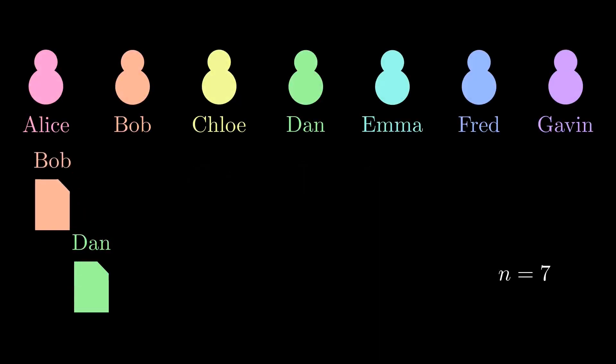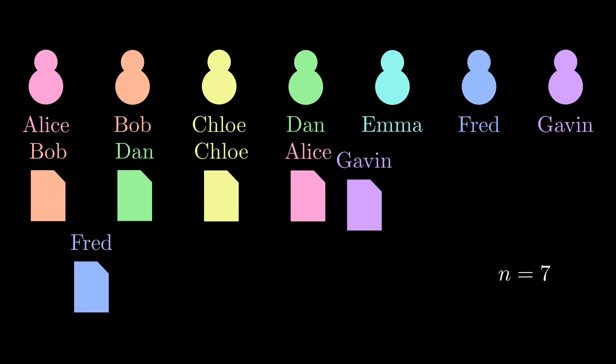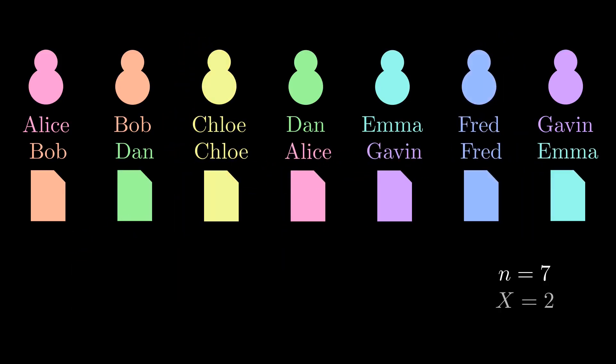To recap, we showed that the expected number of fixed points for a randomly chosen permutation is exactly 1, no matter how many things are being permuted. That is, we expect on average one student to get their homework back when we hand them out randomly. And that concludes our curious question.